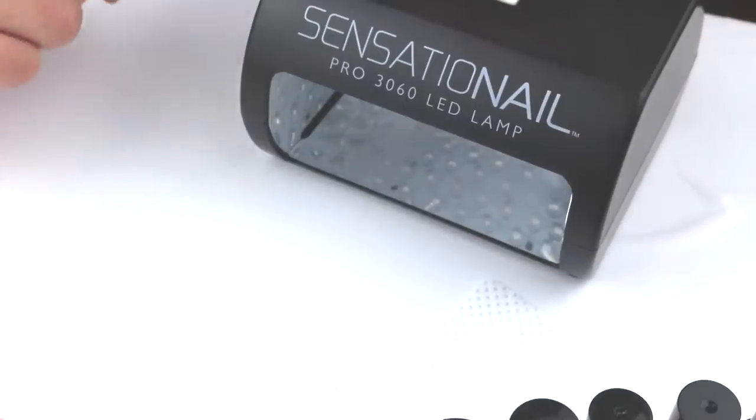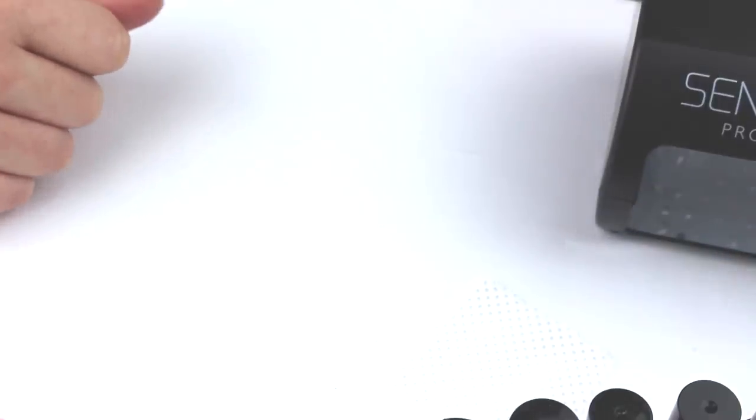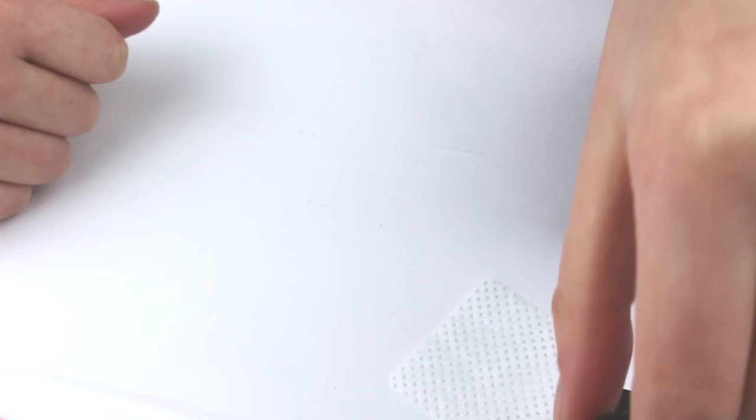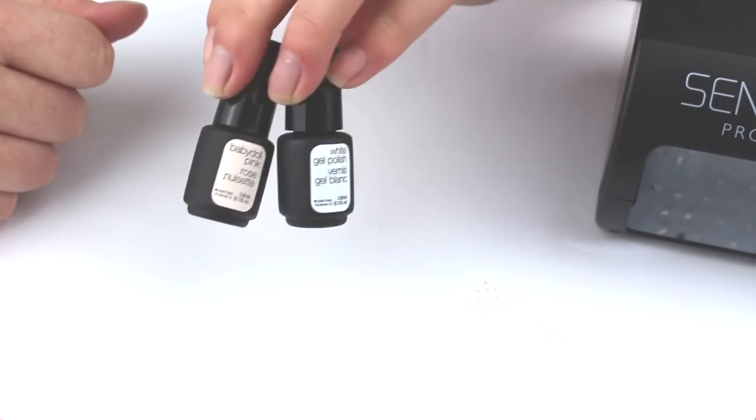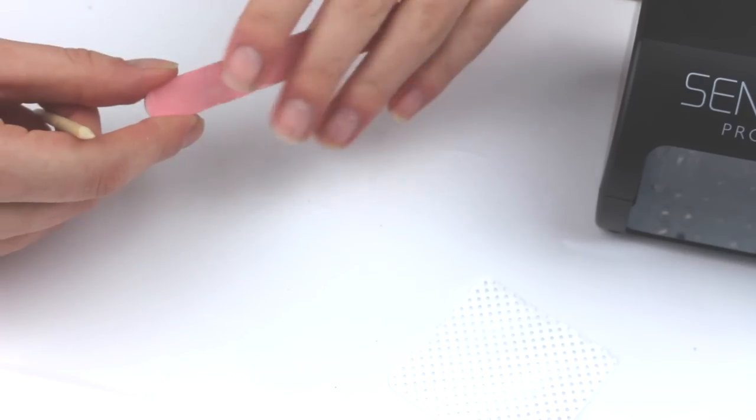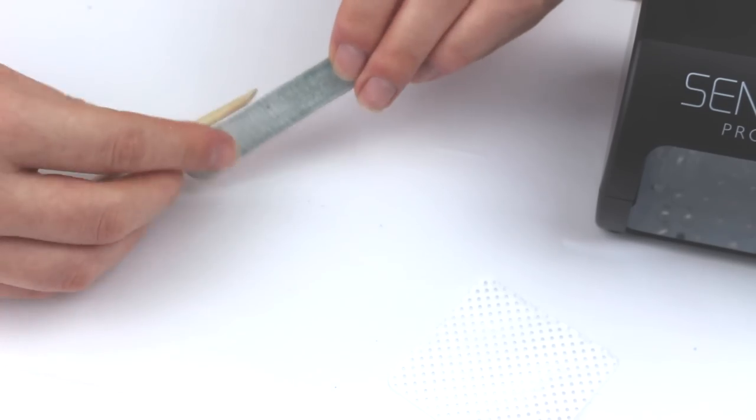So this kit comes with the Sensationale Pro 360 LED lamp which looks like this, it comes with lint-free wipes, gel cleanser, a gel primer, two gel French manicure colors, a pink and a white and the gel base and top coat. It also comes with a nail file and buffer and a manicure stick.